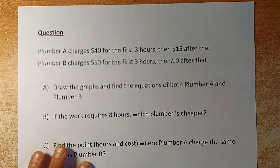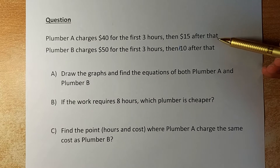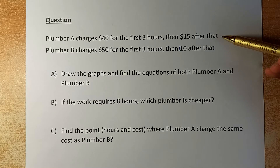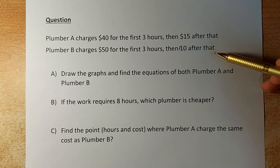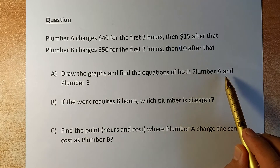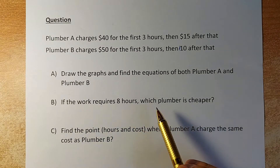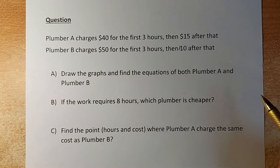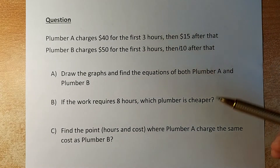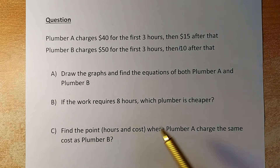Let's look at an example — a simplified version. Plumber A charges $40 for the first three hours and then $15 after that. Plumber B charges $50 for the first three hours and then $10 after that. We are going to first draw the graph and find the equation for both plumbers. If the work requires eight hours, we want to find which plumber is cheaper. We will also find the hours and cost where Plumber A charges the same as Plumber B, which requires simultaneous equations.